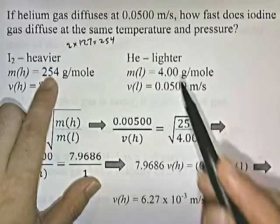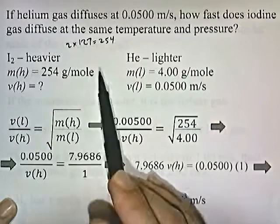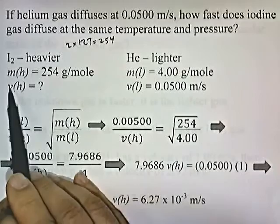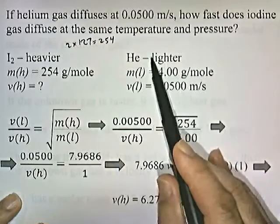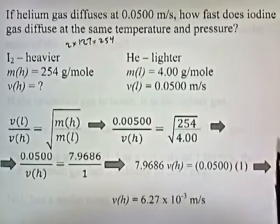So, we can identify which one's heavier and lighter, and now we can identify MH, 254, ML, 4. We don't know how fast the heavier one is moving. That's what we're going to solve for. How fast does iodine gas diffuse? That's what we're solving for, VH. They do tell us that the lighter gas, helium, diffuses at 0.05. So, with this data, we can now plug the numbers into our formula and solve the equation.